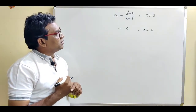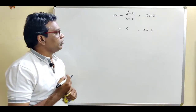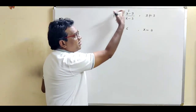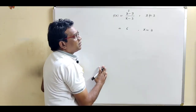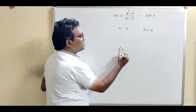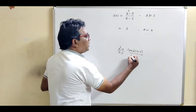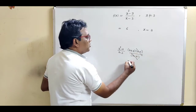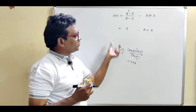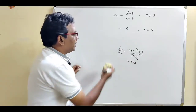We have to check the continuity of this function at x equal to three. If we observe this function very carefully, f(x) equals x squared minus nine divided by x minus three. Factorizing the numerator as (x plus three)(x minus three) divided by (x minus three), the (x minus three) cancels, leaving x plus three. So this function is nothing but just x plus three.